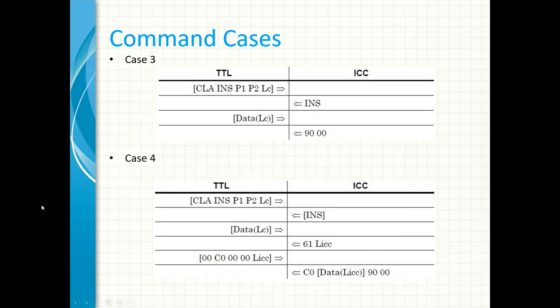For Case 3, the IC card sends the procedure byte which equals the INS instruction byte upon reception of the command header, after which the terminal transmission layer has to send the data. Then the IC card is expected to send only the status bytes. Case 4 is similar to Case 3, but data is also expected from the IC card. So the IC card uses procedure byte 61 to inform the TTL — the interface device — on how many data bytes will be sent. Thereafter, the TTL issues a GET response command to collect the data either all at once or partially until all is sent from the IC card.